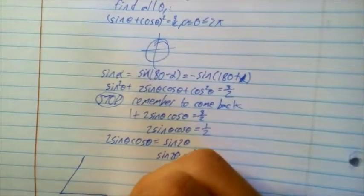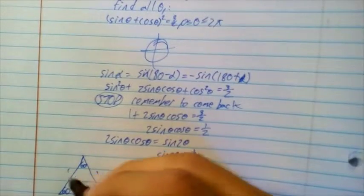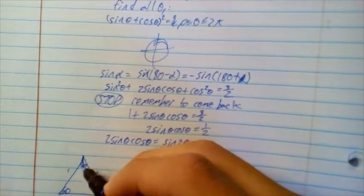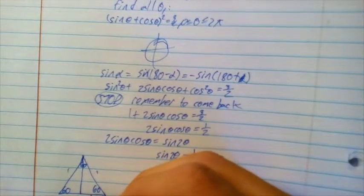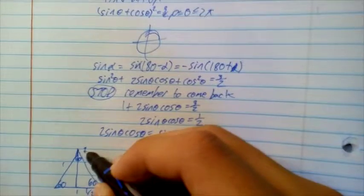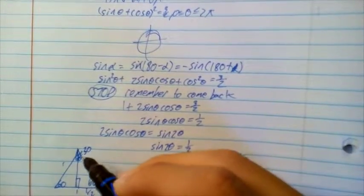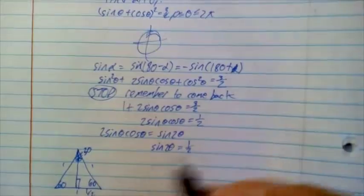Remembering our equilateral triangle, 60 degrees here, 60 here, 60 here, and 1 on each side, we split it in half. We have 1/2 is this length of this side over here, and that 30 is the degrees over here, and that 90 is over here.